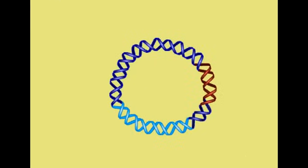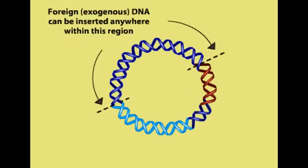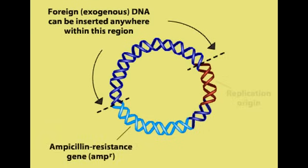Generally, a plasmid vector contains three elements: a cloning site where the foreign DNA fragment can be inserted, a drug-resistant gene which destroys antibiotics, in this case ampicillin, to allow selective growth of the host cell, and a replication origin to allow the plasmid to replicate in the host cell.